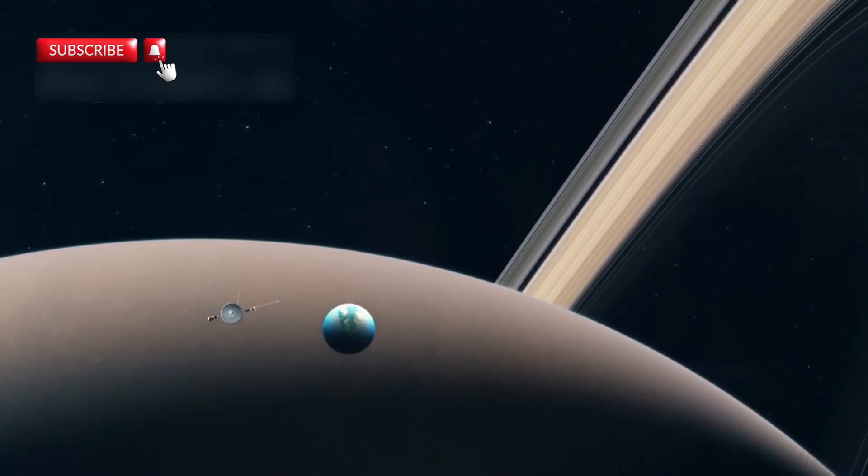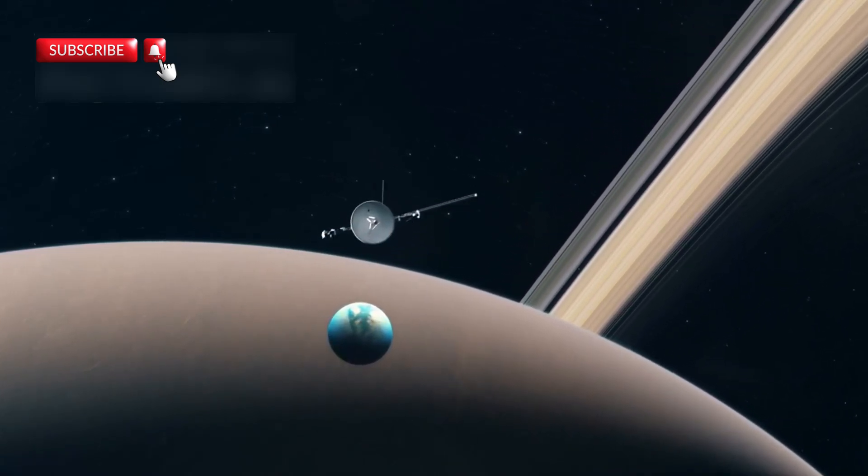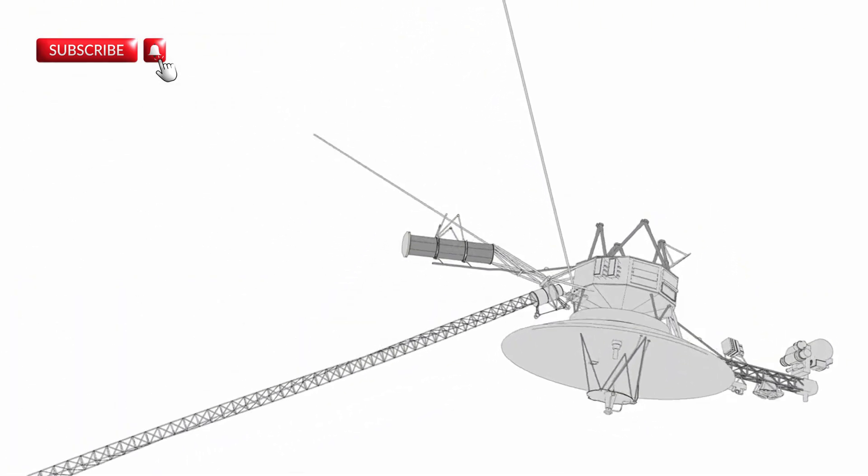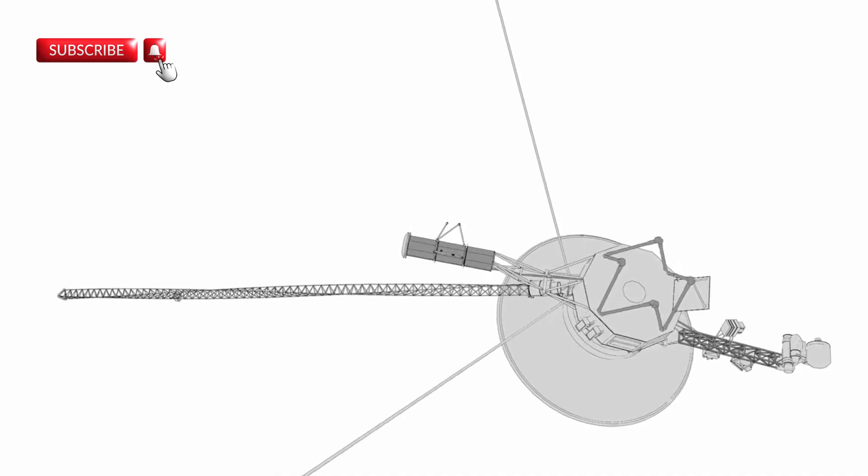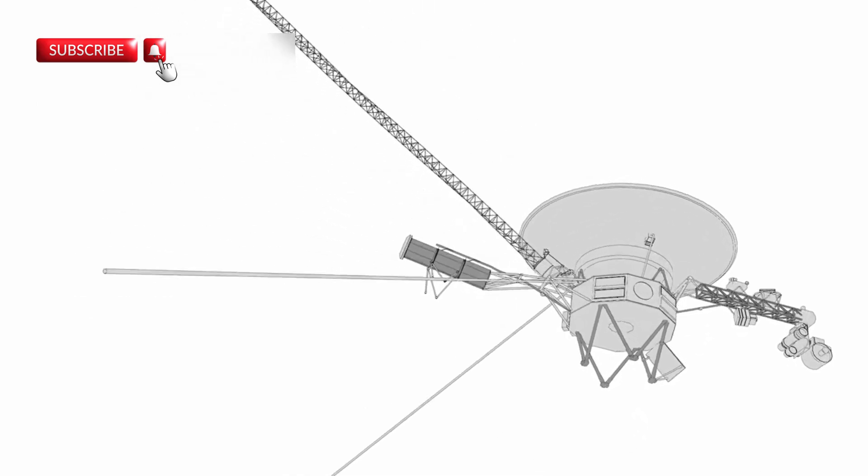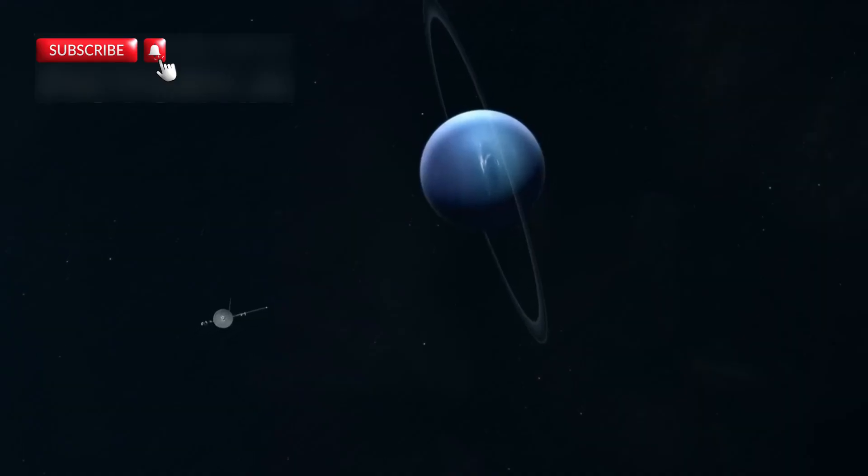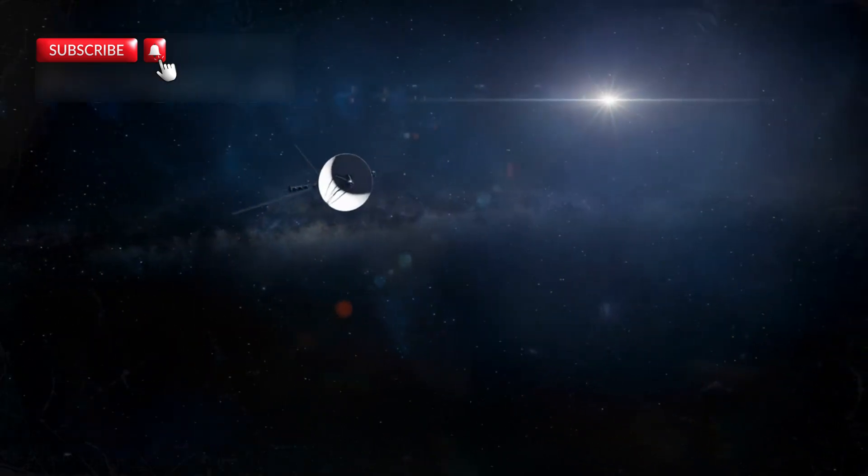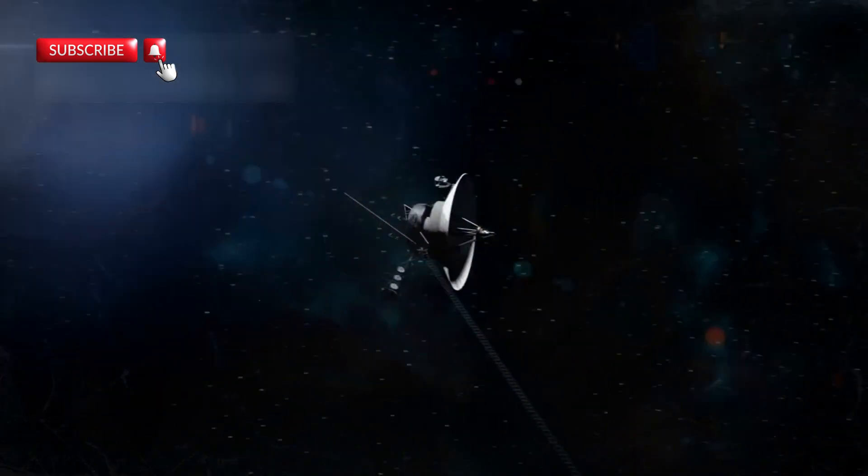Voyager 1 launched in 1977 and was only expected to work for five years. Now, nearly 50 years later, it's still operational, one of the greatest achievements in the history of space exploration. Moving at over 17 kilometers per second, it has traveled more than 14.5 billion miles from Earth. Its longevity was never guaranteed, but its design has stood the test of time.